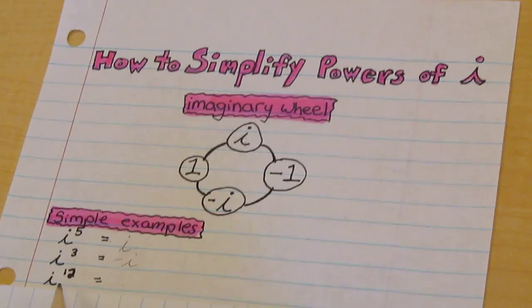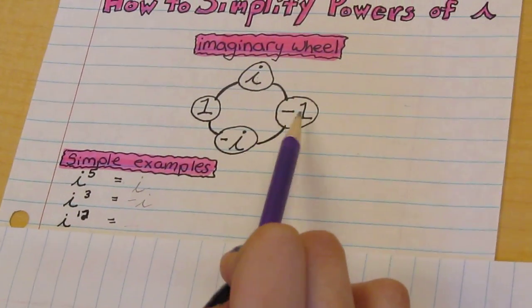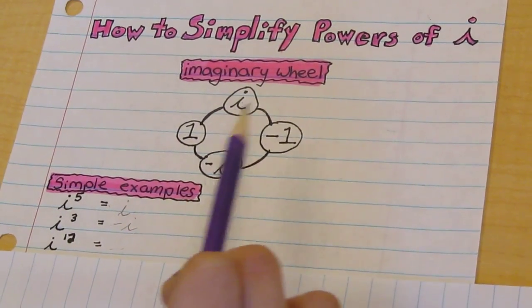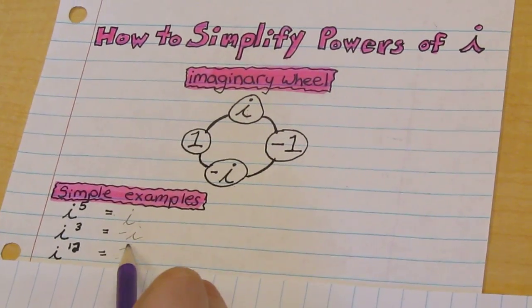For a little bit bigger number we still do the same thing. One, two, three, four, five, six, seven, eight, nine, ten, eleven, twelve. The answer is one.